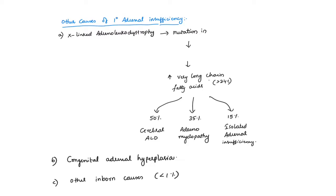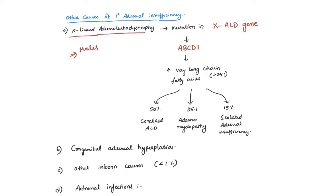One important genetic cause is X-linked adrenoleukodystrophy, which is mostly seen in males. It is due to mutation in the XALD gene, leading to a defect in the peroxisomal membrane transporter ABCD1. Because of this mutation, very long chain fatty acids accumulate in cells. This disorder can manifest in three forms: in 50% of individuals it begins at childhood as cerebral adrenoleukodystrophy; in 35% it involves the myelin causing adrenomyeloneuropathy; and in 15% there is only isolated adrenal insufficiency.